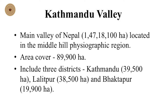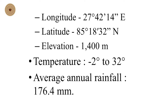The average latitude is 27 degrees 42 minutes and 14 seconds east. The average temperature ranges from minus 2 degrees centigrade to 32 degrees centigrade, and the average annual rainfall is 176.4 millimeters.